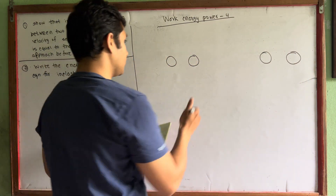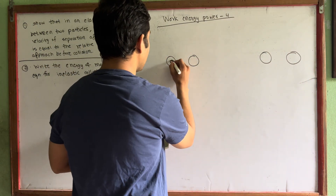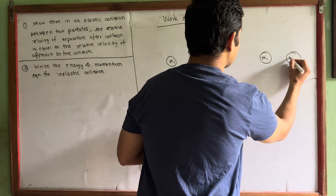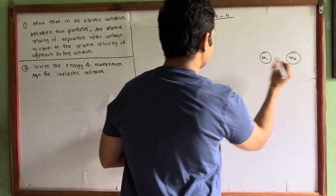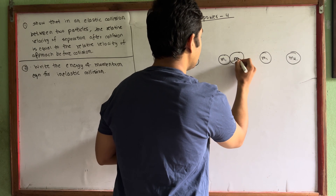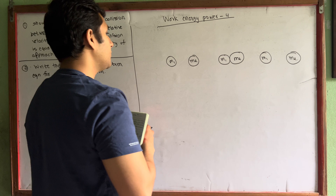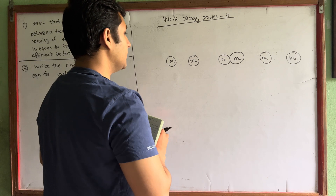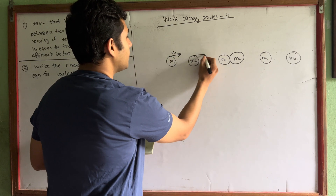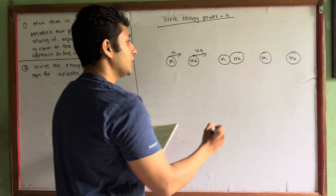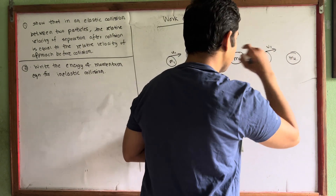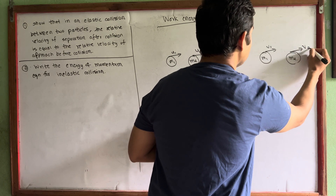I am going to show this in a diagram. Suppose m1 is a mass and m2 is another mass. I will show that m1 equals m2. The velocity of m1 before collision is u1, the velocity of m2 before collision is u2, and after collision the velocities are v1 and v2.